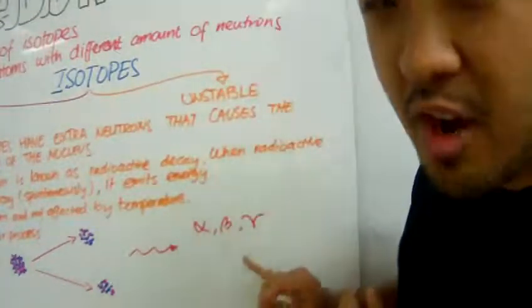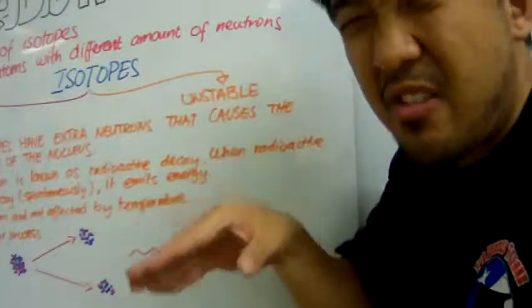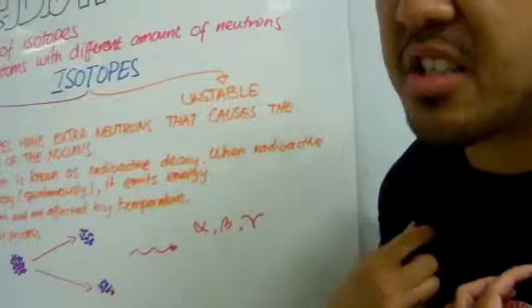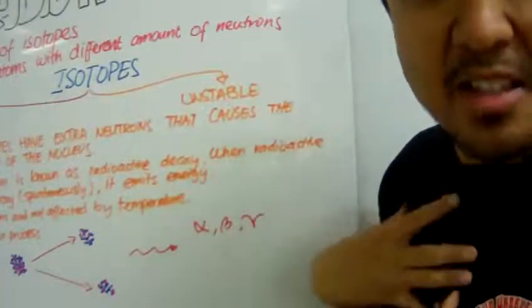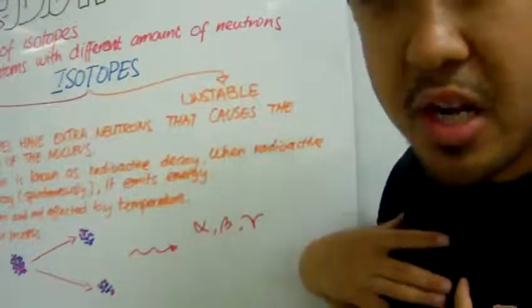And then, finally, we have gamma ray radiation. Gamma rays are fast-moving radiation that penetrates deep into our skin and can cause us to get cancer. And die, basically. Too much radiation, you die.